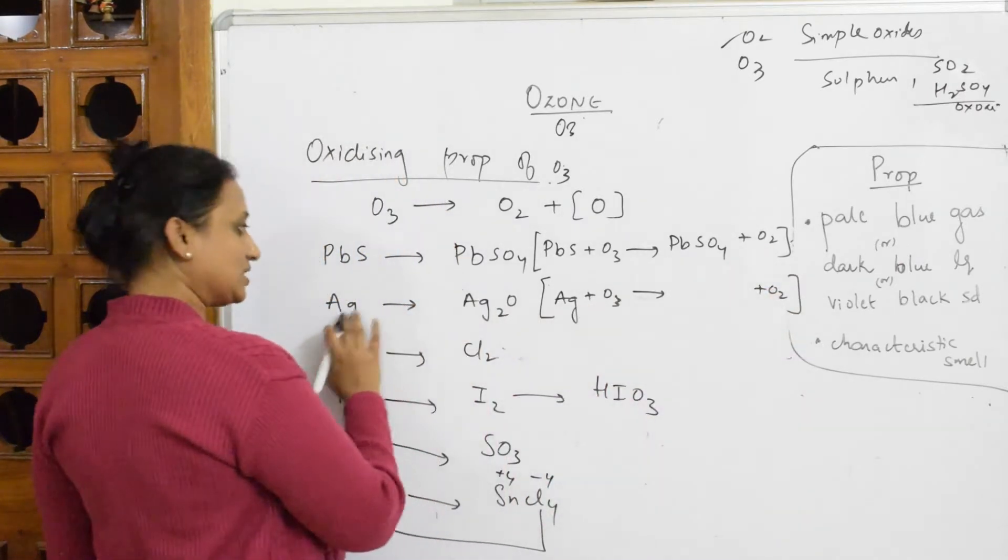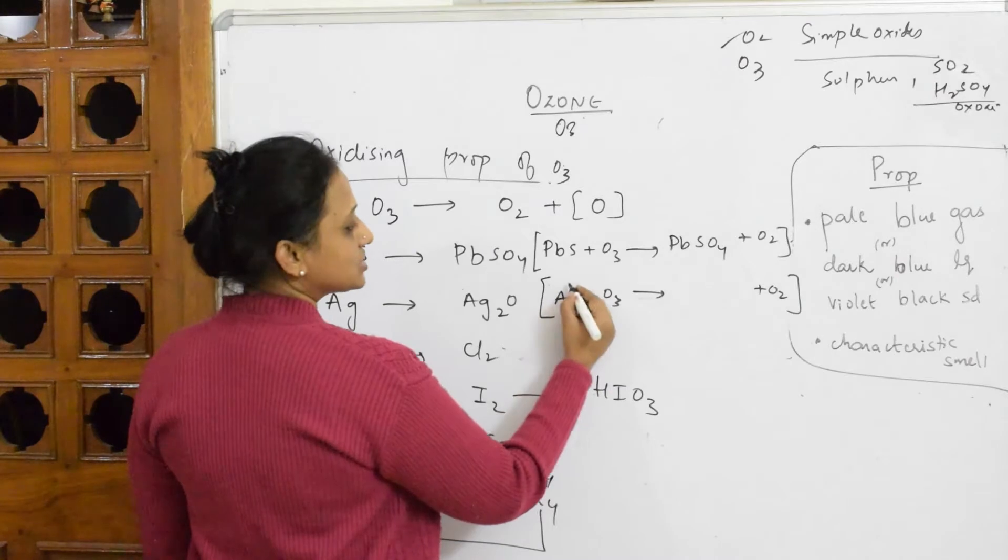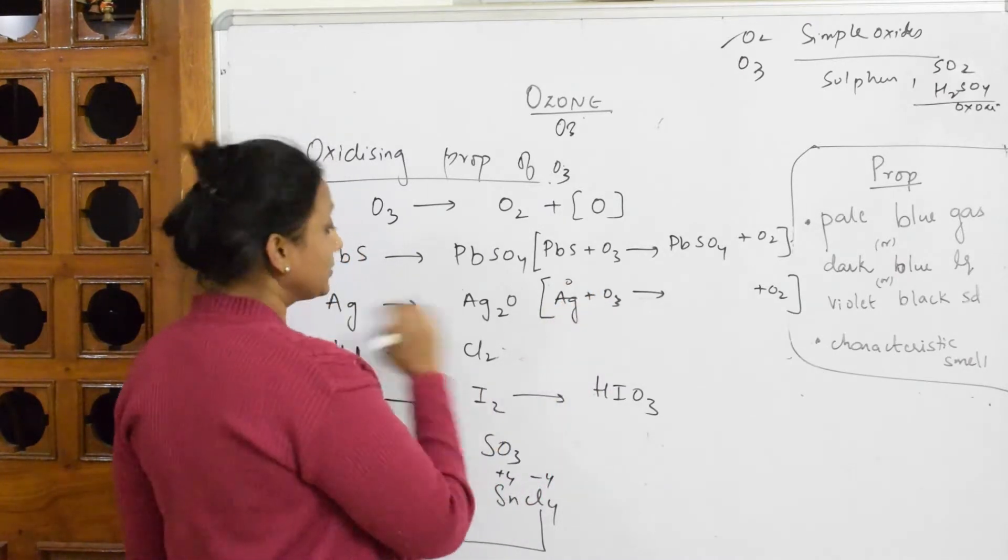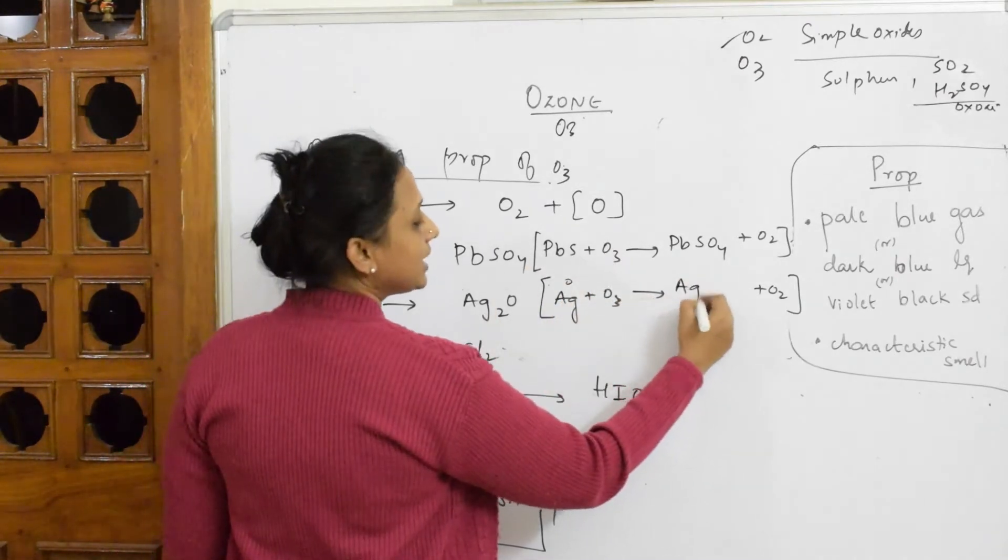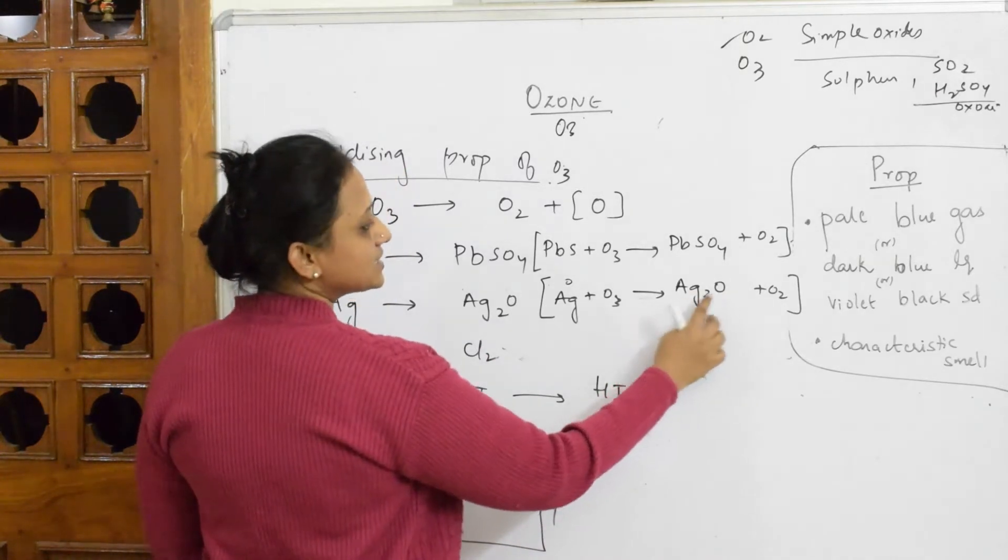Now here it gets converted into Ag2O done. Here what is its valency? This is minus 2. This is plus 1.